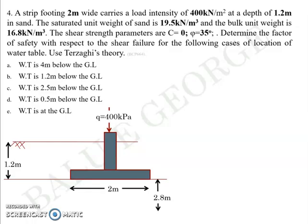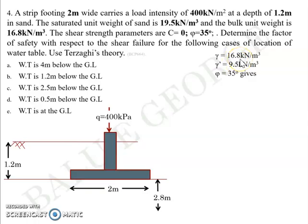This problem concerns the effect of water table on ultimate bearing capacity. Bulk unit weight γ = 16.8 kN/m³; saturated unit weight = 19.5 kN/m³; submerged unit weight γ' = 19.5 − 10 = 9.5 kN/m³. With φ = 35°, we get Nq and Nγ from the Terzaghi/IS code table. Nc does not come into picture because C = 0.